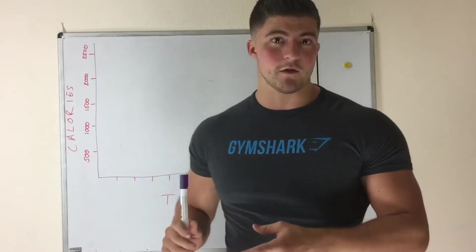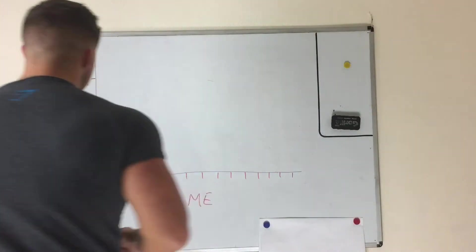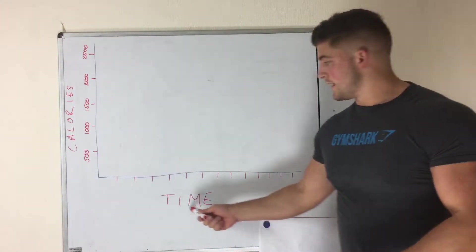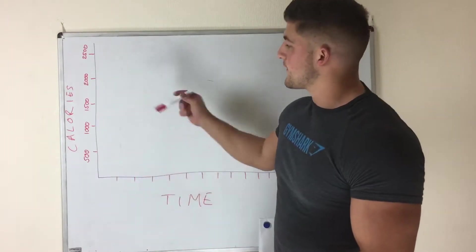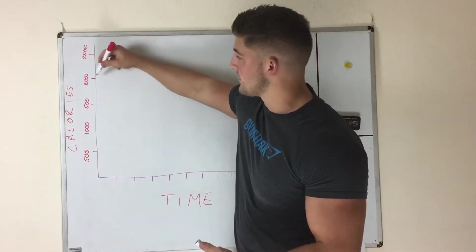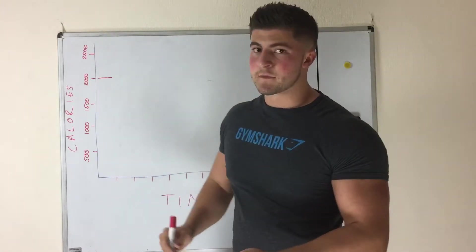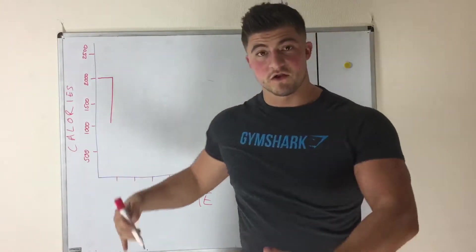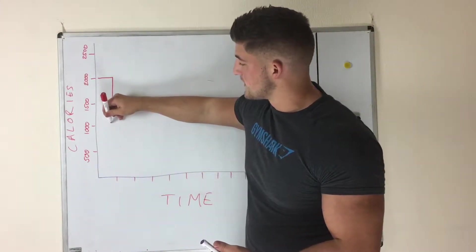I'm going to give you a little bit of an overview of what it is and what you need to do to compensate for it. On the whiteboard, we've got time on the bottom axis and calories on the side. For example, if your calorie intake is usually around 2,000 — and we'll use the red pen for calorie intake — and then all of a sudden you drop down to 1,000 calories because you're on a diet. That's far too low for most people, but let's use 1,000 because it's an easy number.